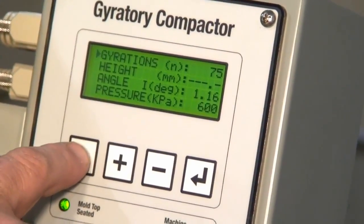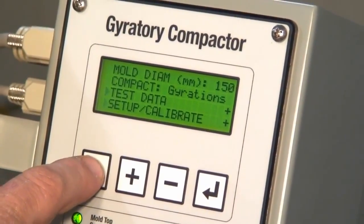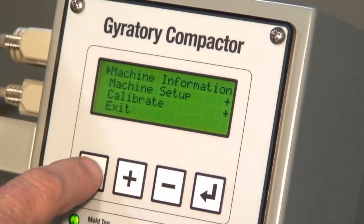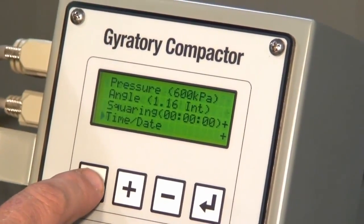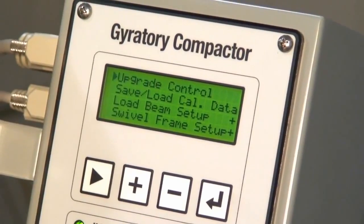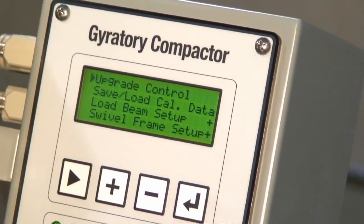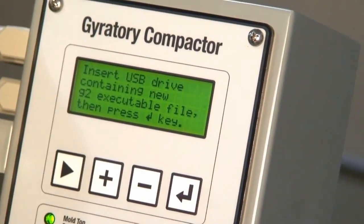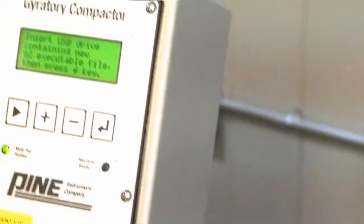From the main menu on the G2, pick Setup Calibrate, Machine Setup, Advanced Setup, and then Upgrade Control. You'll be asked to insert the USB drive. Insert the drive that was supplied with your kit. Press the Enter key when you're ready. Press Plus for Yes.